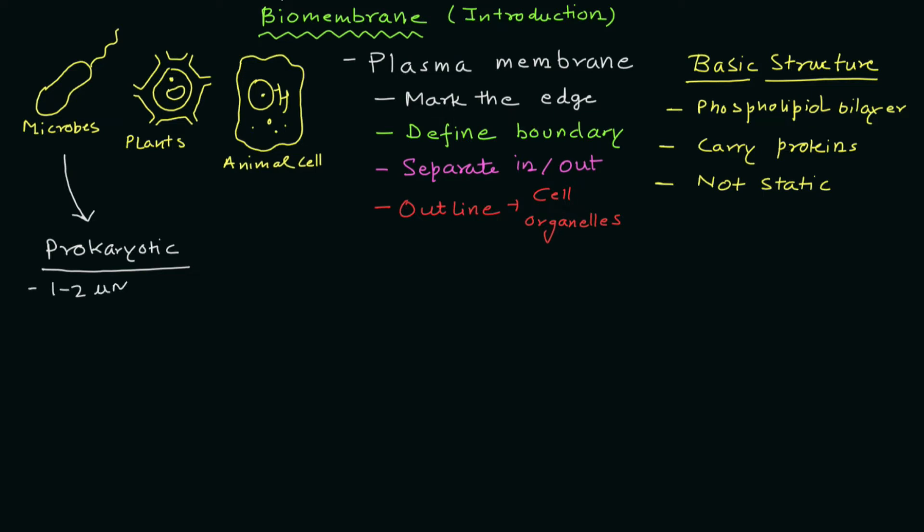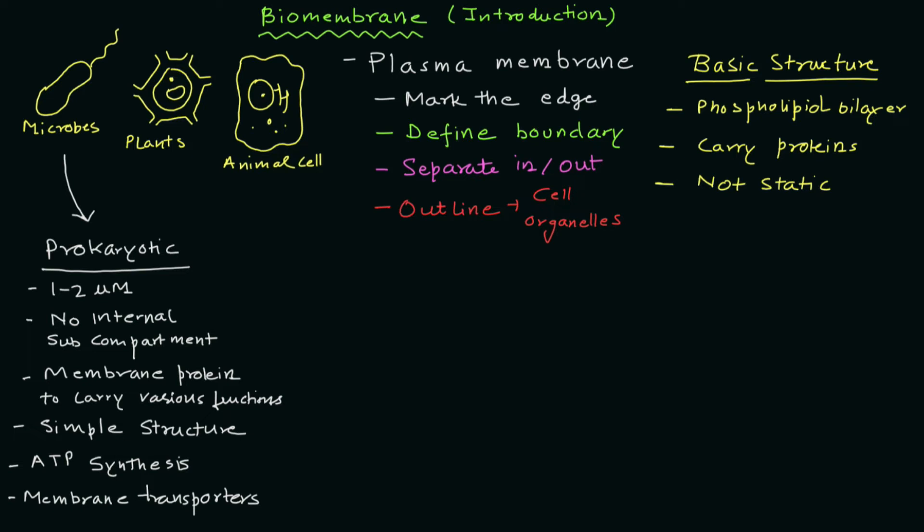The membrane of prokaryotic organisms has dimensions of one to two micrometers. It is very simple and has no sub-compartments. The membrane contains membrane proteins that carry various functions. They are quite simple in structure and perform ATP synthesis. They also have numerous membrane transporters.